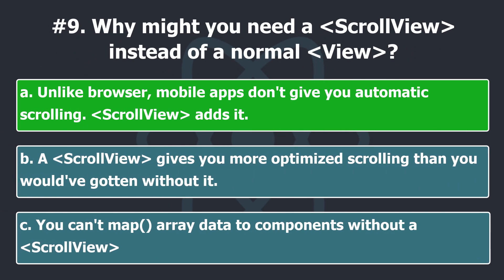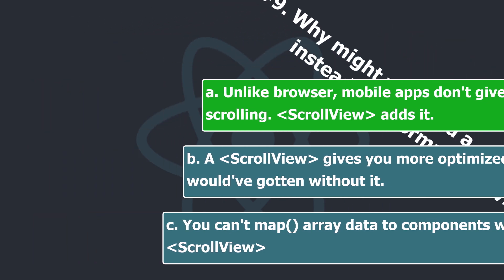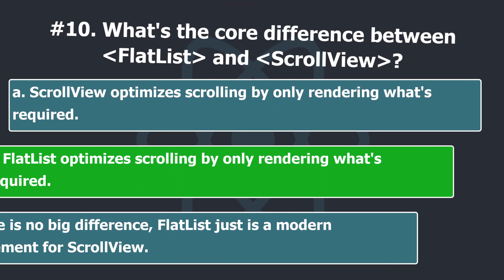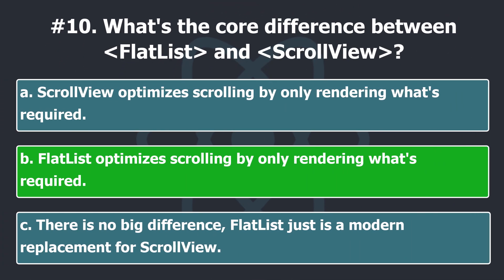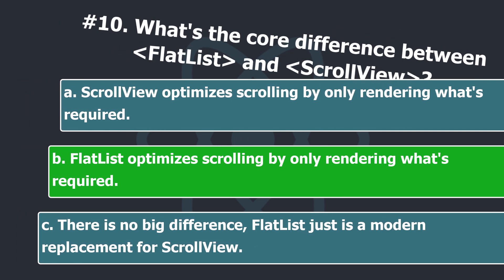Unlike a browser, mobile apps don't give you automatic scrolling — the ScrollView component adds it. However, using ScrollViews in large arrays will cause problems, because every time we display the list in it, the whole list is loaded at once. But FlatList only renders items that are required to be displayed.